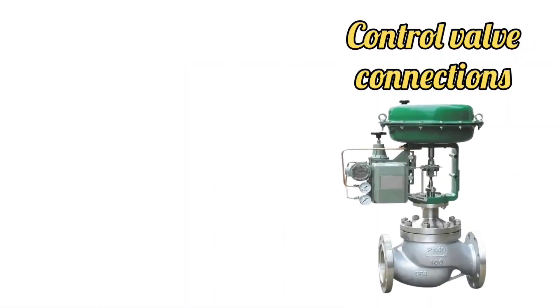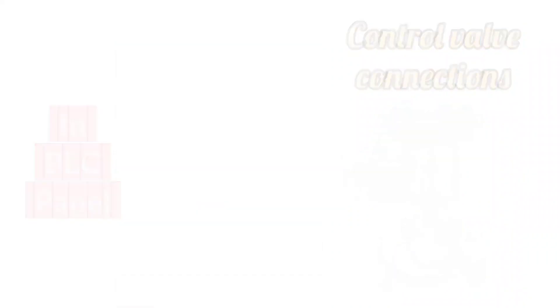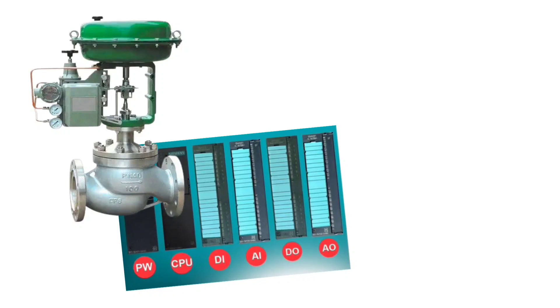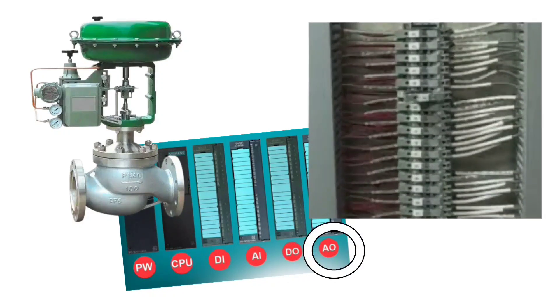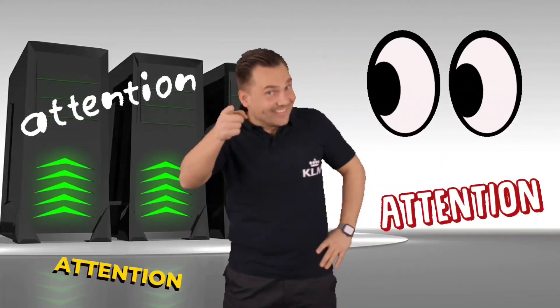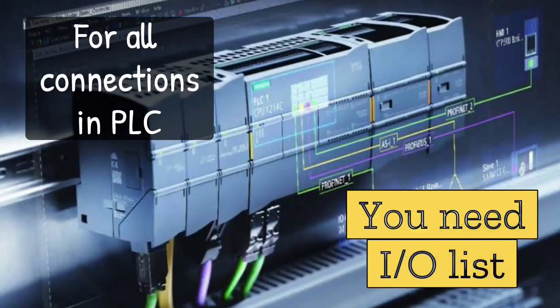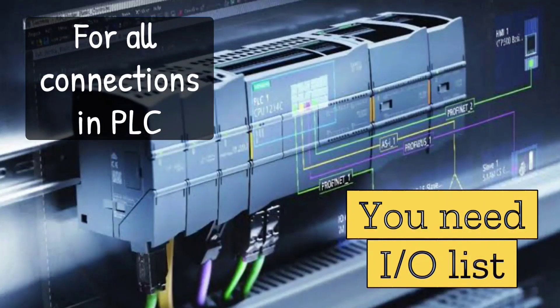Let's discuss control valve connections in PLC panel. How we connect them? In PLC panel, connections of control valves are done in analog output, means AOTB. One thing you have to keep in mind guys, for all the connections in PLC, you will need IO list, meaning input output list.